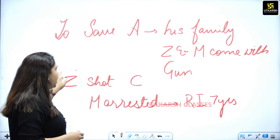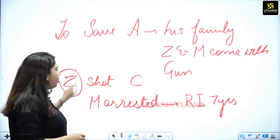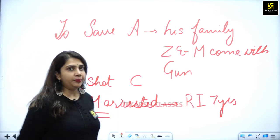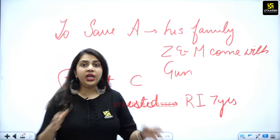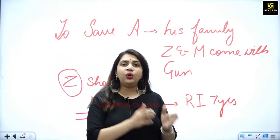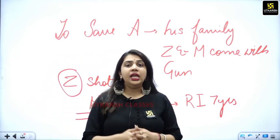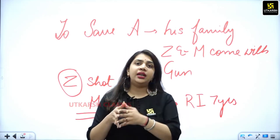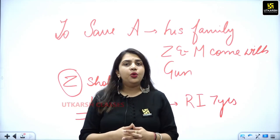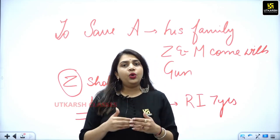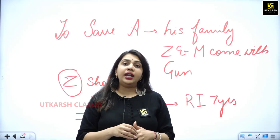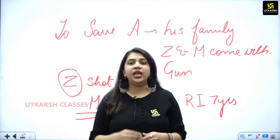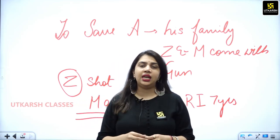Now, this person fled. But Mahbub Shah, who had no gun, only came along with the group so that they could be scared. What happened was that when they saw the arrest, this person received a rigorous imprisonment of 7 years.